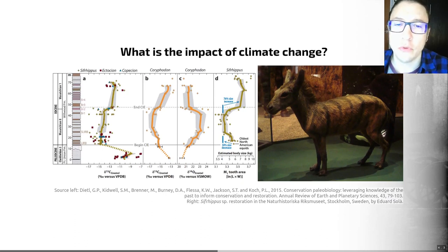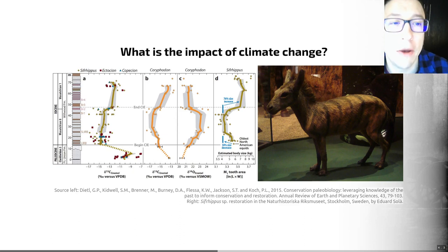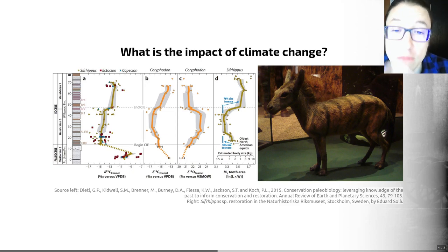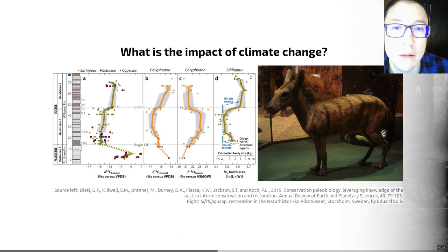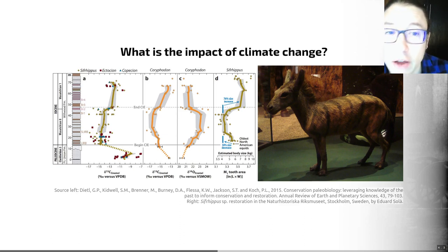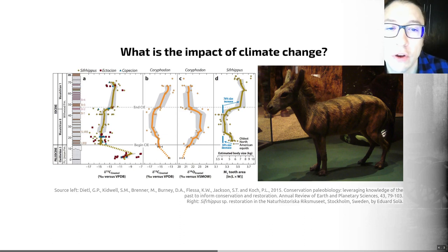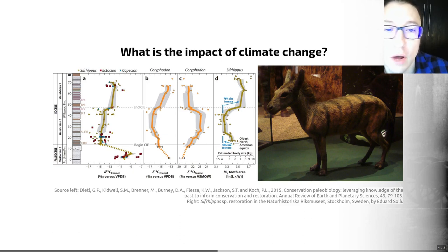These examples are also useful because they help us understand the impact of anthropogenic climate change. Biotic responses to recent climate change have been studied largely using observational data on living plants and animals, and future predictions are based on modelling. But models are difficult to validate using the limited range of recent climate variability, whereas the fossil record provides unique information on the biological consequences of climatic change — countless natural experiments to examine ecological and evolutionary responses.